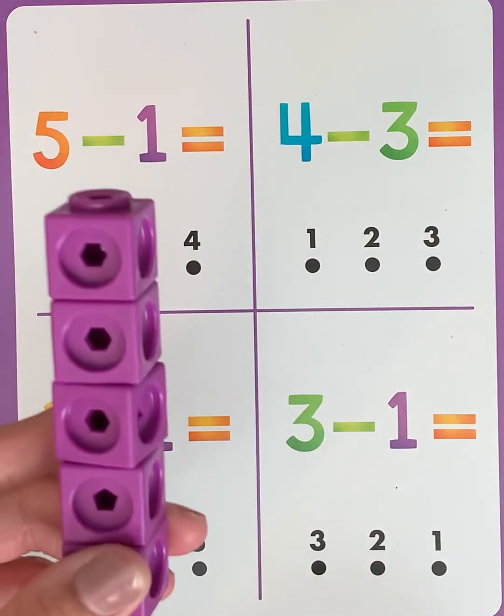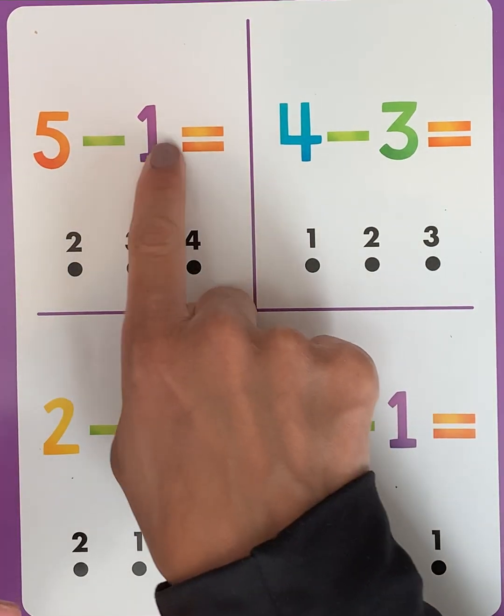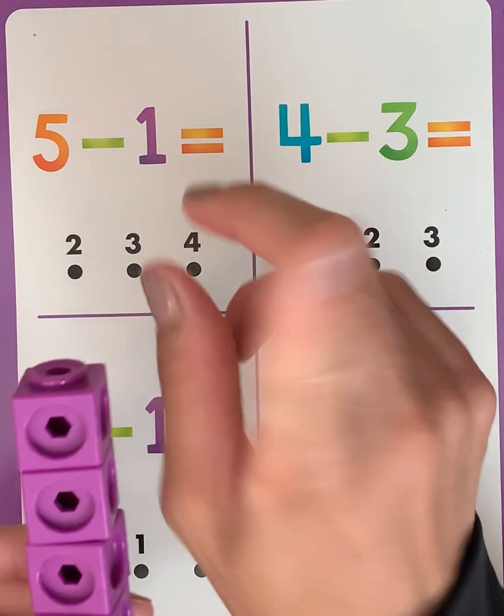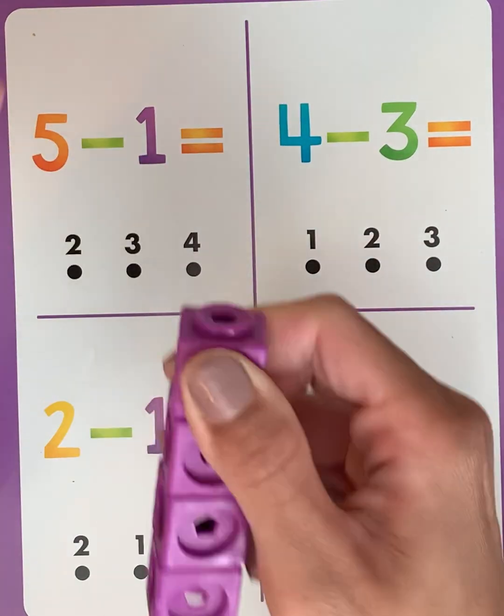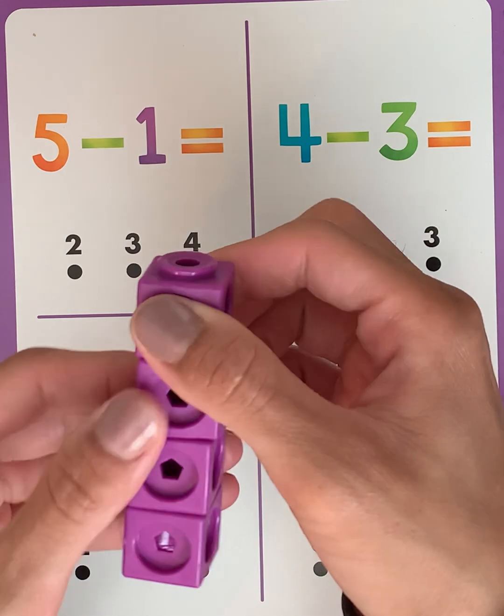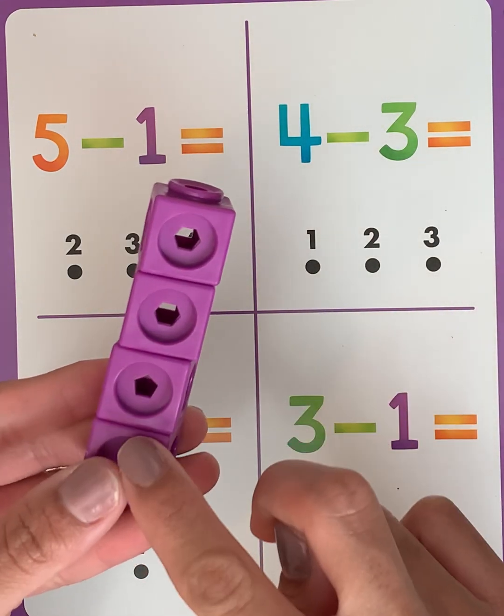So we have our 5 cubes and we want to subtract 1. We want to take away 1. So let's take away 1. What do we have now? 1, 2, 3, 4.